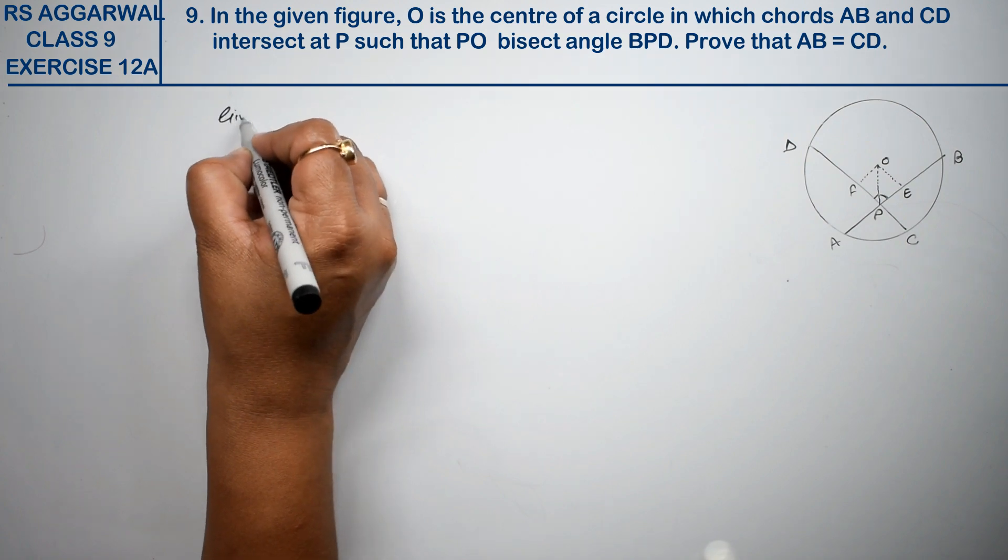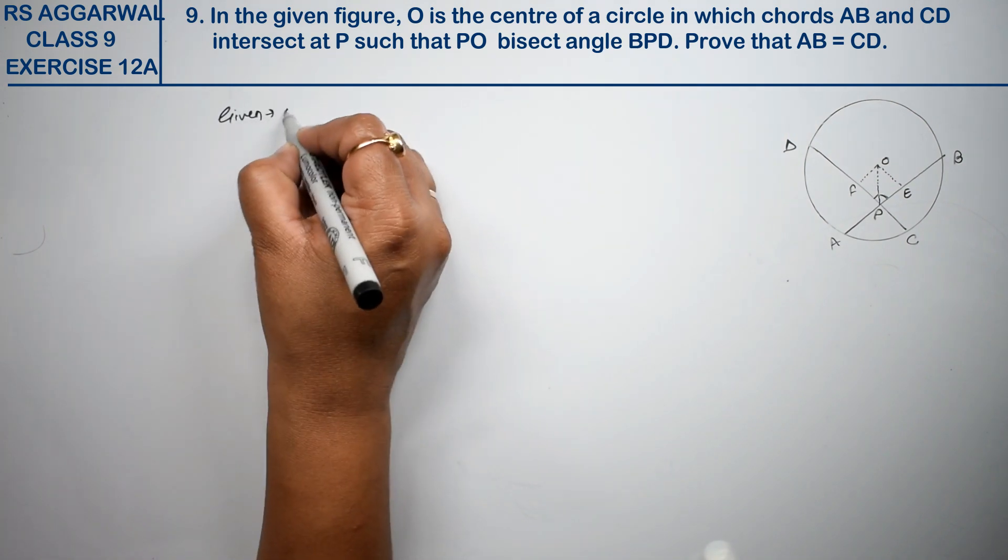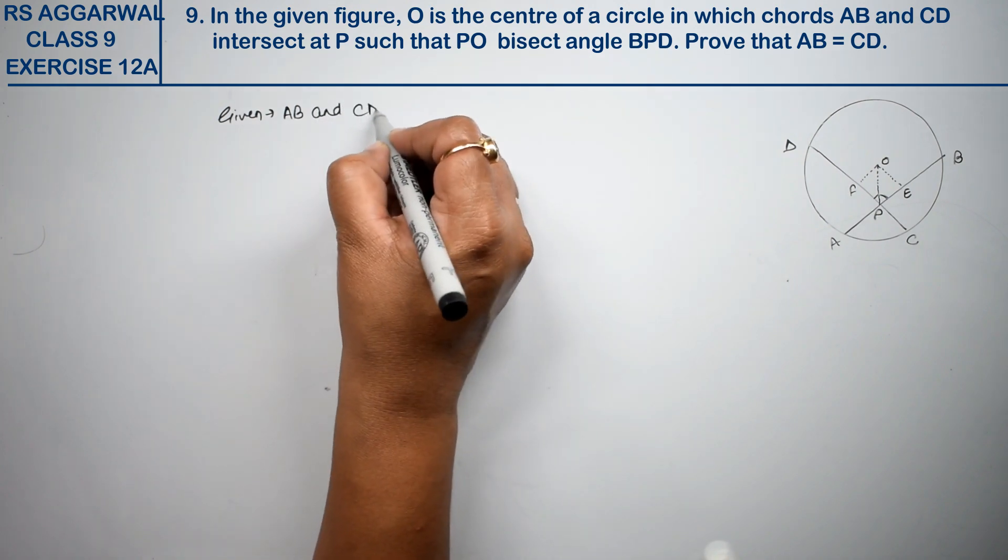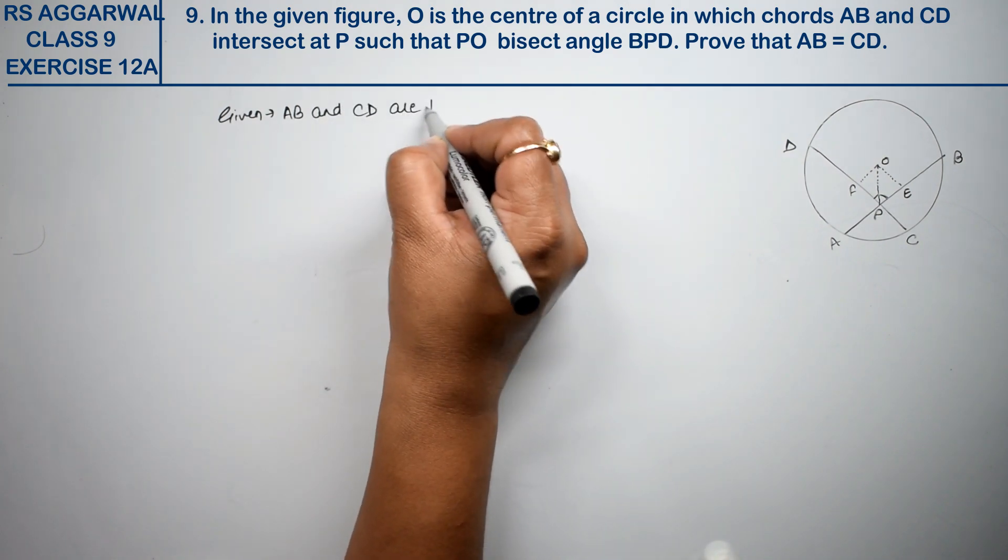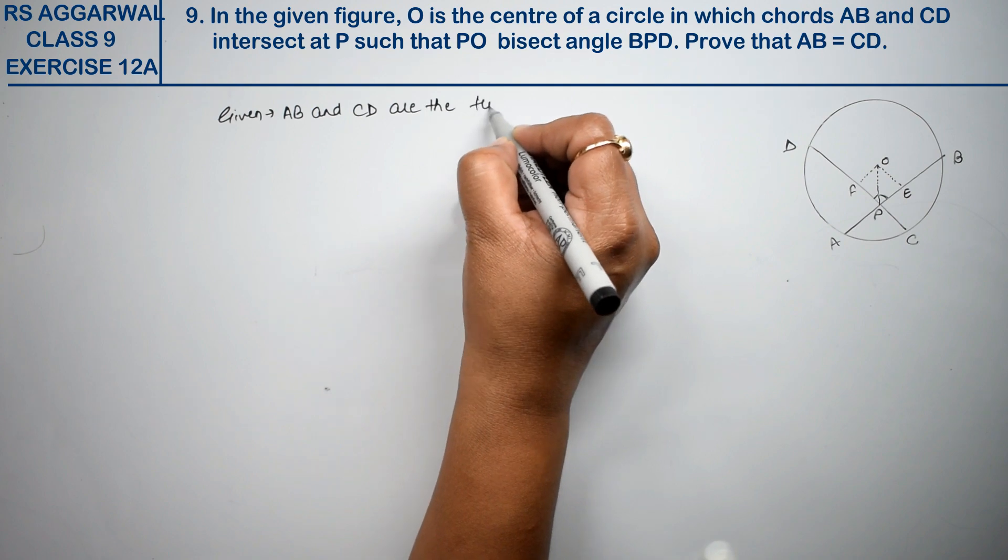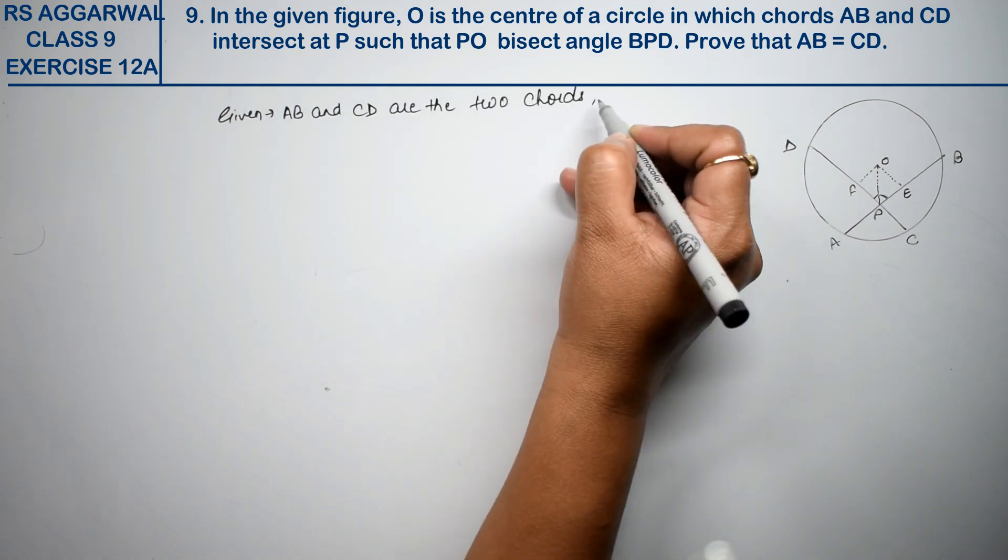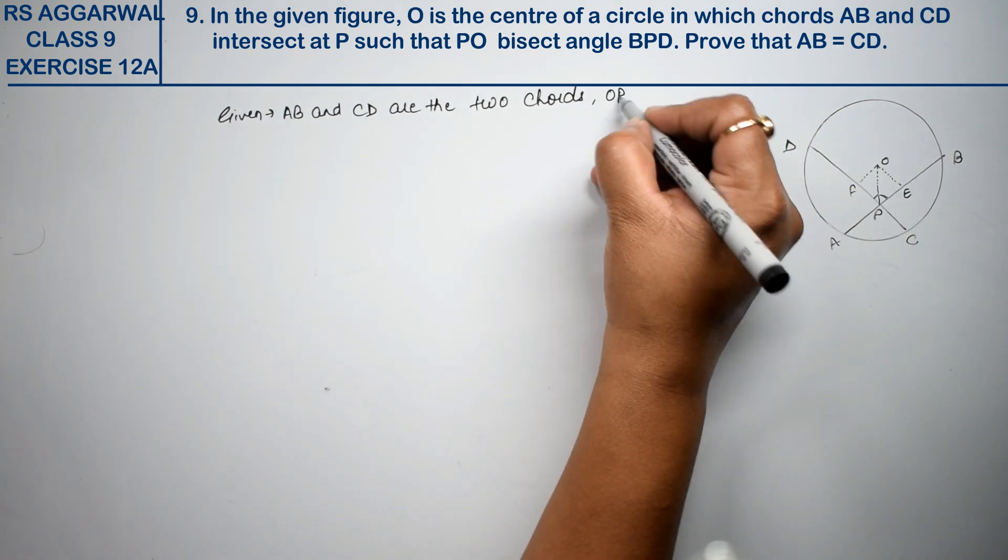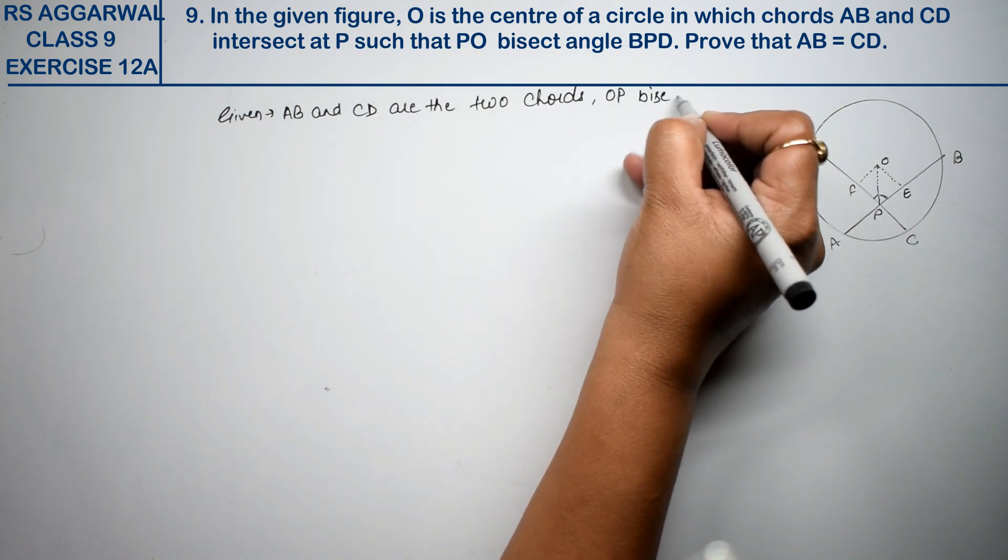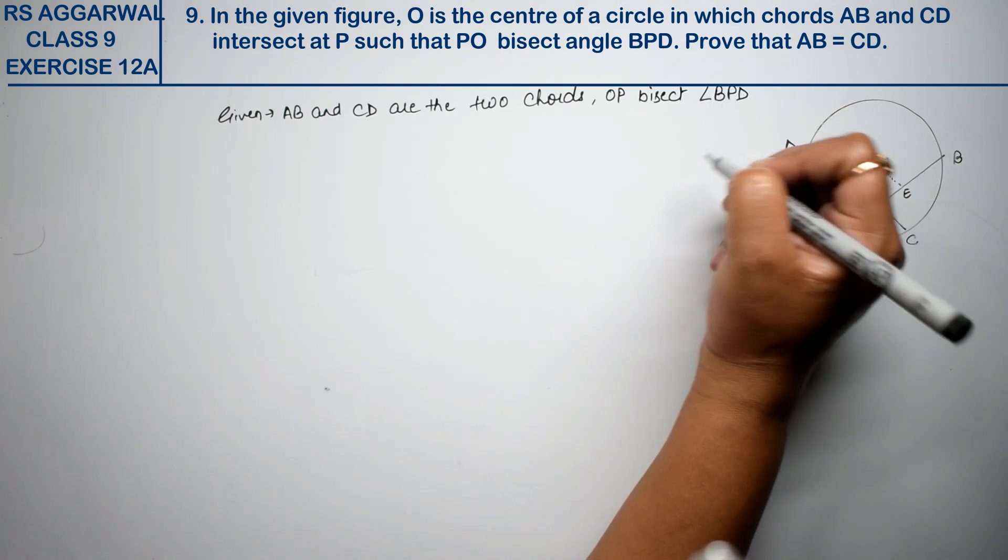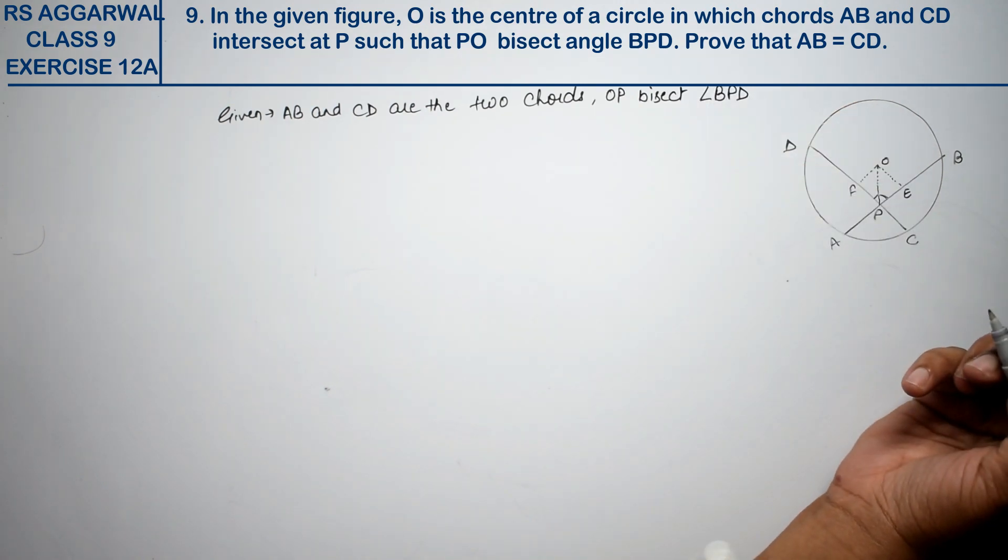Given: AB and CD are the two chords. And what else is given? OP bisects angle BPD. That's it.